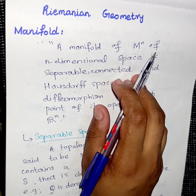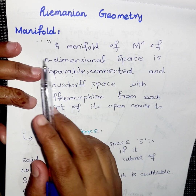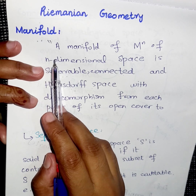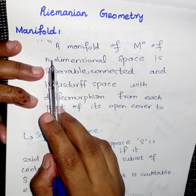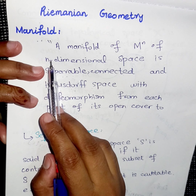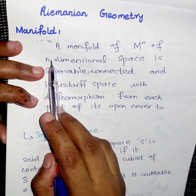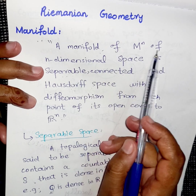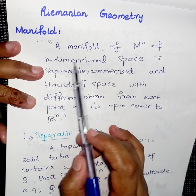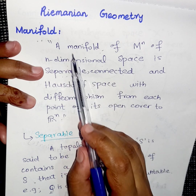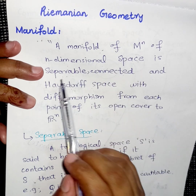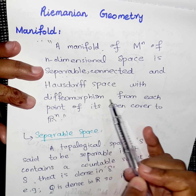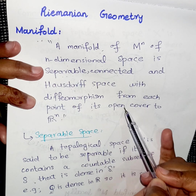In this lecture we will discuss the definition and examples of a manifold. It is very difficult to define a manifold accurately, but we will use its properties and try to define it. A manifold Mⁿ of n-dimensional space is separable, connected, and Hausdorff space with a diffeomorphism from each point of its open cover to Rⁿ.